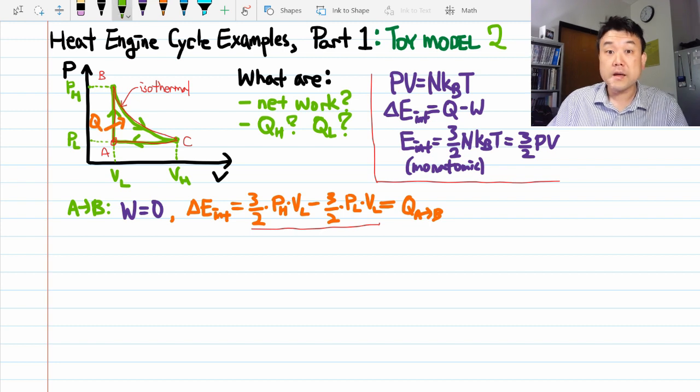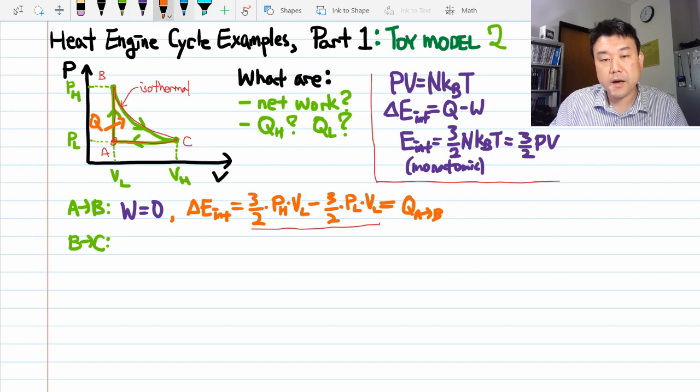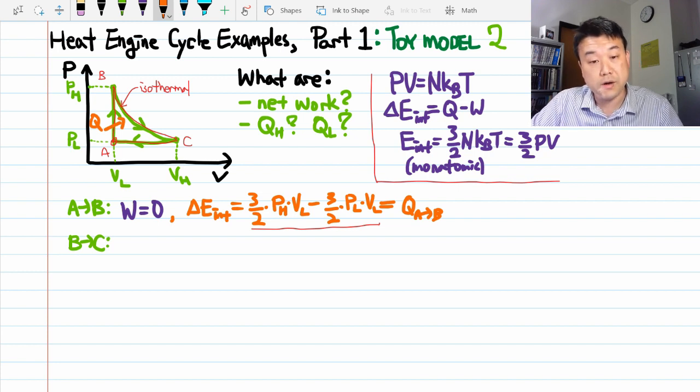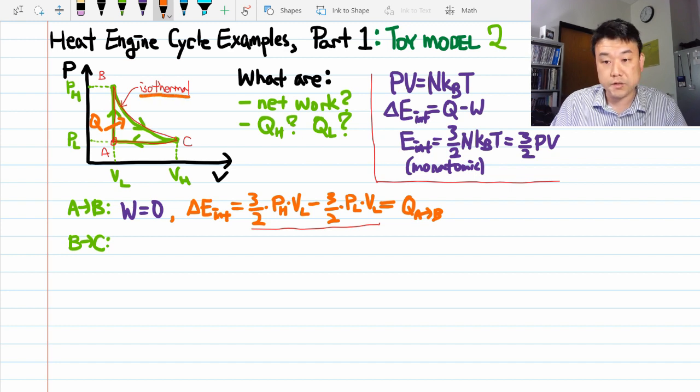Kind of makes sense. Now the thermodynamic process from B to C is interesting. So here, instead of being able to say something about work right away, we can actually say something about the internal energy change right away. If it's isothermal, that means temperature isn't changing, so internal energy is not changing.